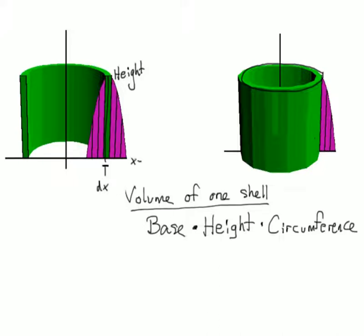Let's call the base dx to indicate how incredibly small the base becomes. The height is y, and if we call the radius of our cylinder r, then the circumference is 2πr.